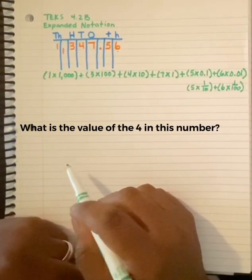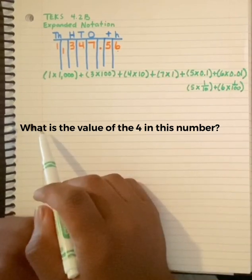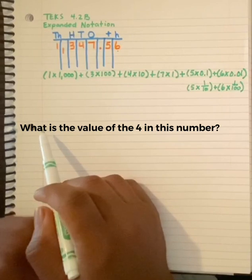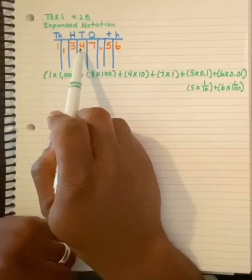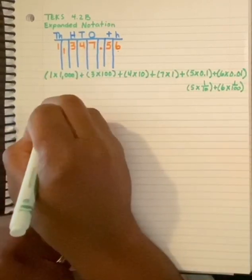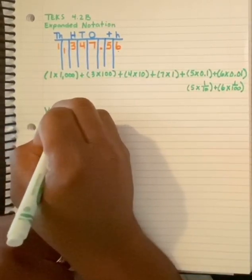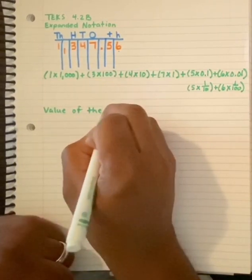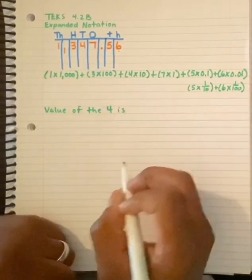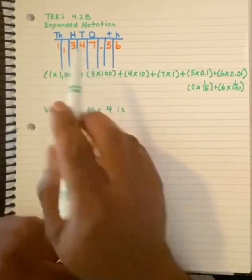But you could get this type of question. What is the value of the four in this number? Well, the four is here, and we know it's four tens. So the value of the four is 40.